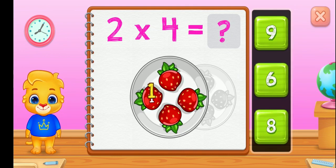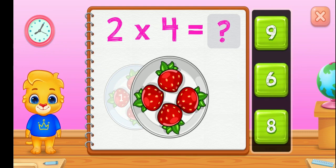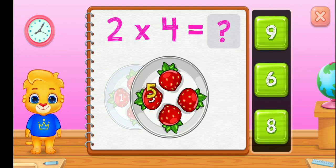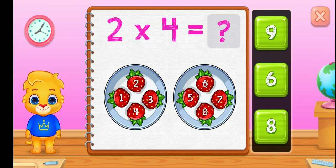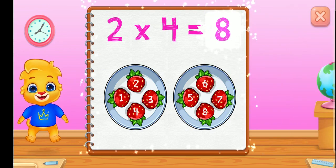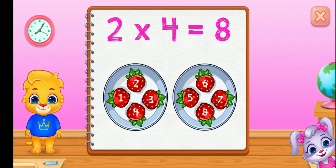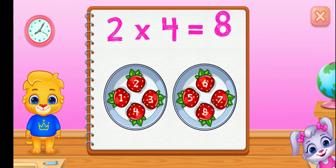One, two, three, four, five, six, seven, eight. Two groups of four equals eight.